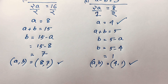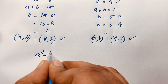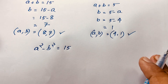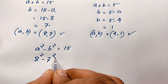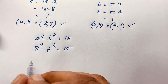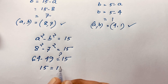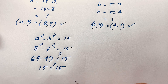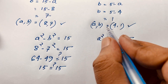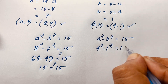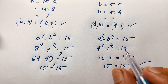Now let's verify. Our question is a² - b² = 15. For (a, b) = (8, 7): 8² - 7² = 64 - 49 = 15 ✓. Left hand side equals right hand side. For (a, b) = (4, 1): 4² - 1² = 16 - 1 = 15 ✓. Left hand side equals right hand side. Both solutions check out.